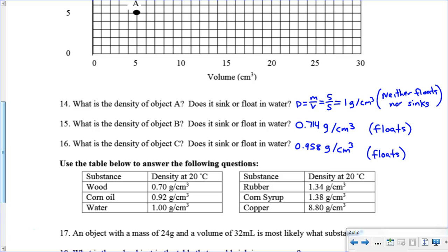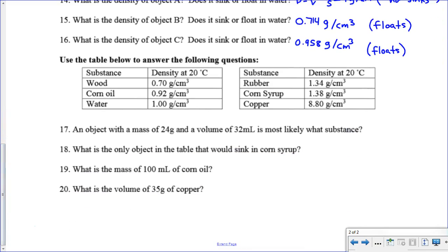Now we have these questions at the end. It says an object has a mass of 24 grams and a volume of 32 milliliters, what's it most likely to be? On this one we take 24 divided by 32. If you do that, you can reduce that by 8, so that's really like 3 fourths, which is equal to 0.75 grams per centimeter cubed. So 0.75, if I look at the list, the closest one to that is wood, so I'm going to go with wood on this one.